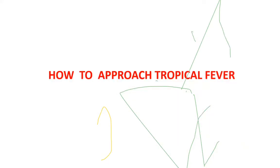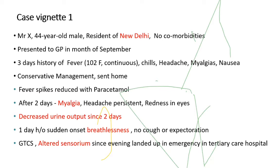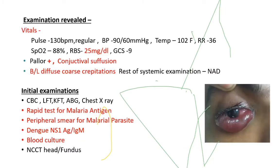Case scenario: A 44-year-old male resident of New Delhi with no prior comorbidities presented to a general physician in September with 3 days of high-grade fever at 102°F, continuous, associated with chills, headache, and myalgia. He was initially managed conservatively and sent home. Fever spikes reduced with paracetamol but after 2 days there was severe myalgia, persistent headache, redness of the eye, decreased urine output, sudden onset breathlessness, and altered sensorium. He landed up in the emergency of a tertiary care hospital.